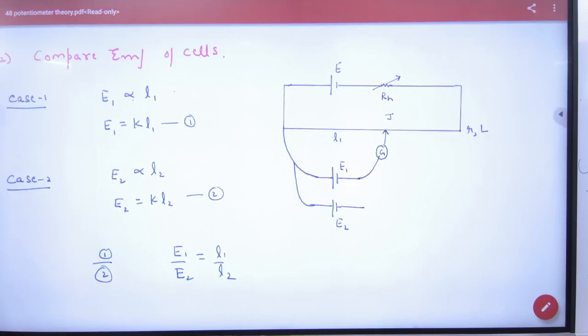Potentiometer application number 2 is that it can compare two EMFs, two cells EMF to compare and compare E1 by E2 value.